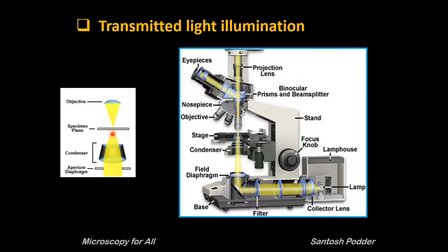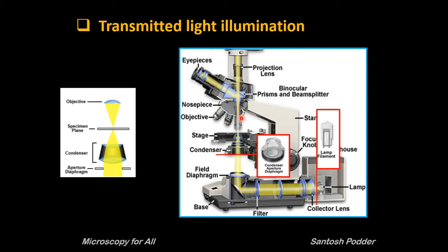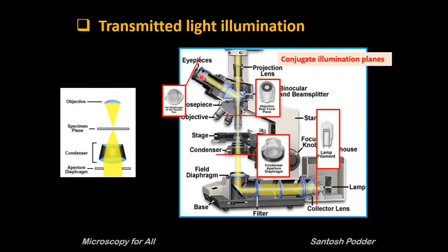The condenser projects a cone of light to illuminate the field of view in the sample. Parallel light rays that pass through and illuminate the sample are brought to focus at the back focal plane of the objective, where the image of the lamp filament and the condenser aperture diaphragm will be seen in focus — that is why these three planes are called conjugate planes. We have another aperture plane at the exit pupil of the eyepiece, which appears to hang in space a few millimeters above the eyepiece. This is simply the image of the illuminated rear aperture of the objective. So all four planes are conjugate illumination planes.